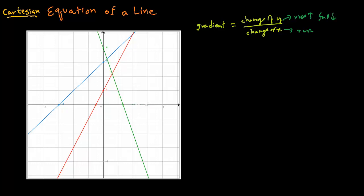Now let's take a look at the picture over here. You can find a gradient by comparing any two points. Let me take this blue line over here. So you can see if we take this point and another point over here, it is running forward by two units — that's the change in x — and it is rising by two units. So it is two by two. So the gradient or slope, usually given by the letter M, is one.